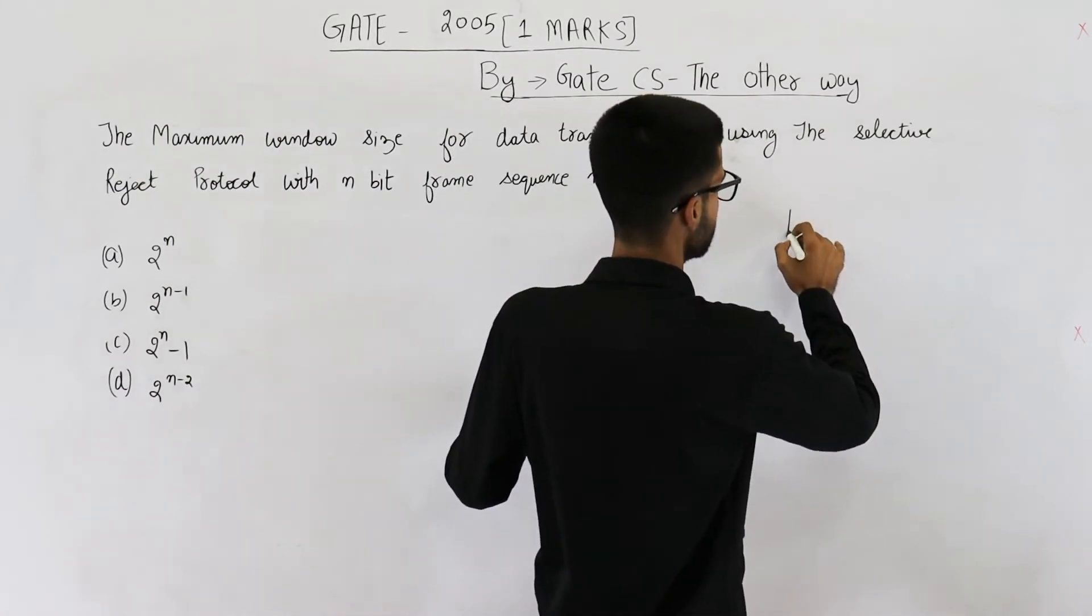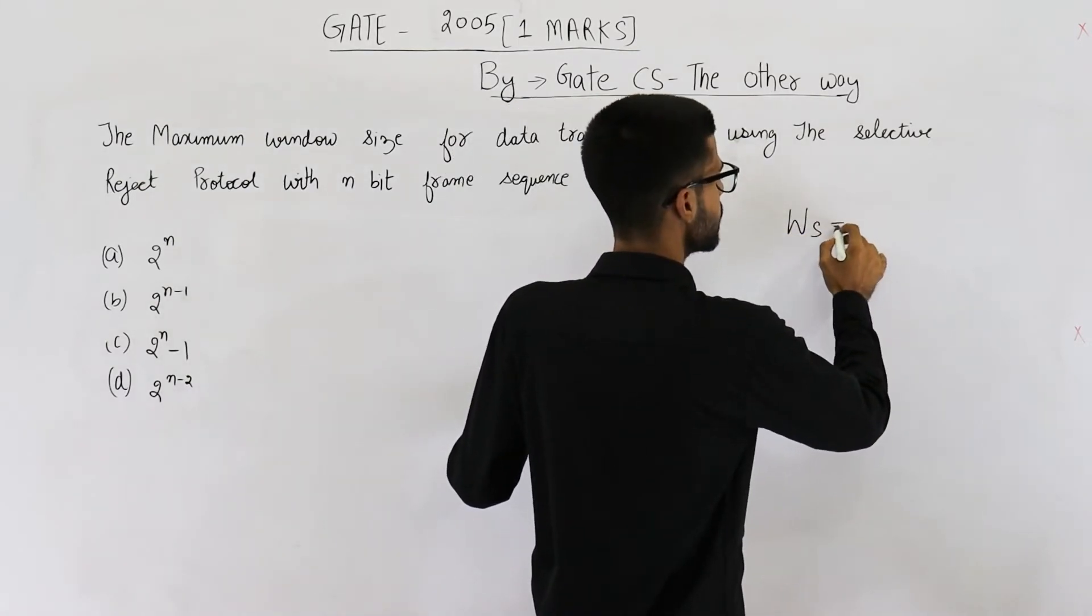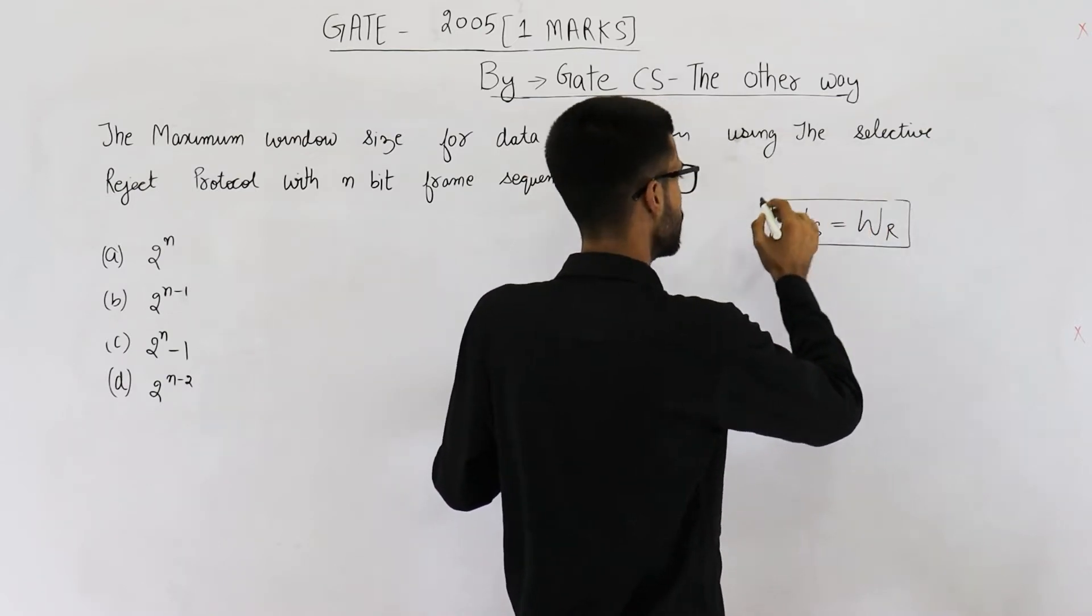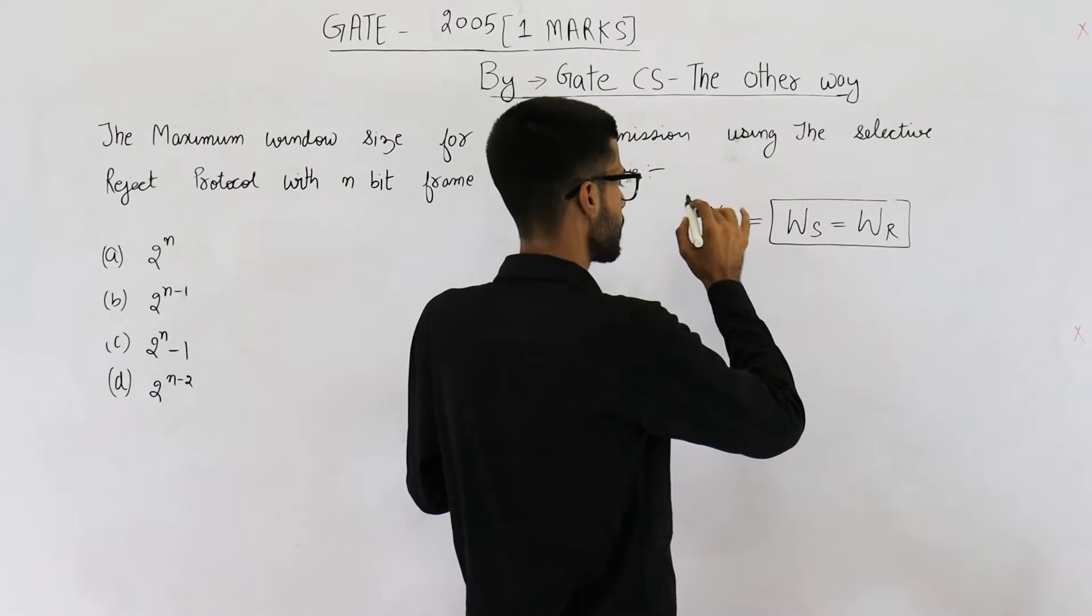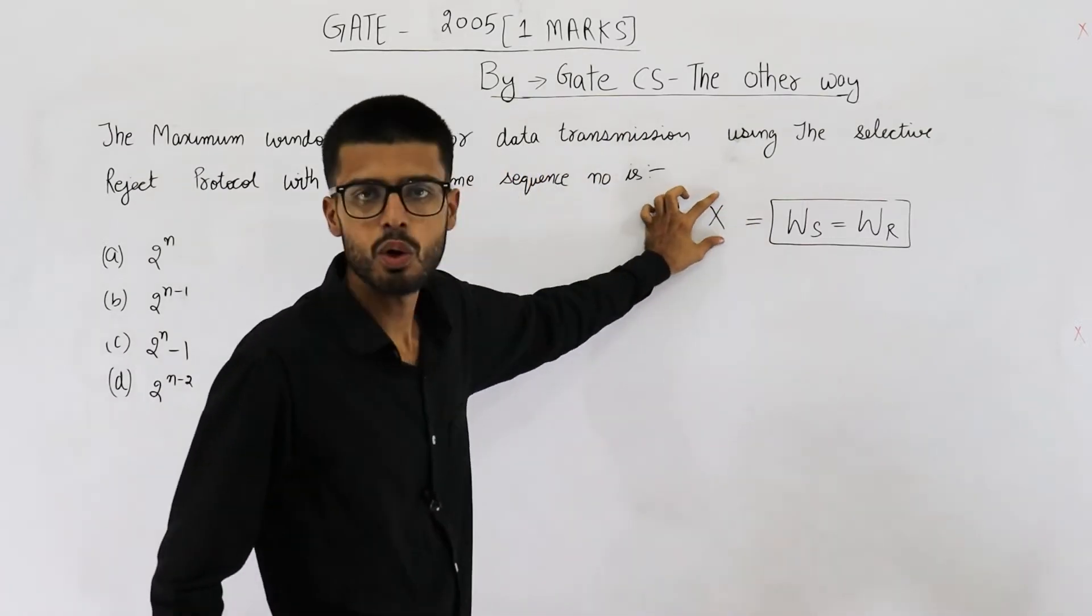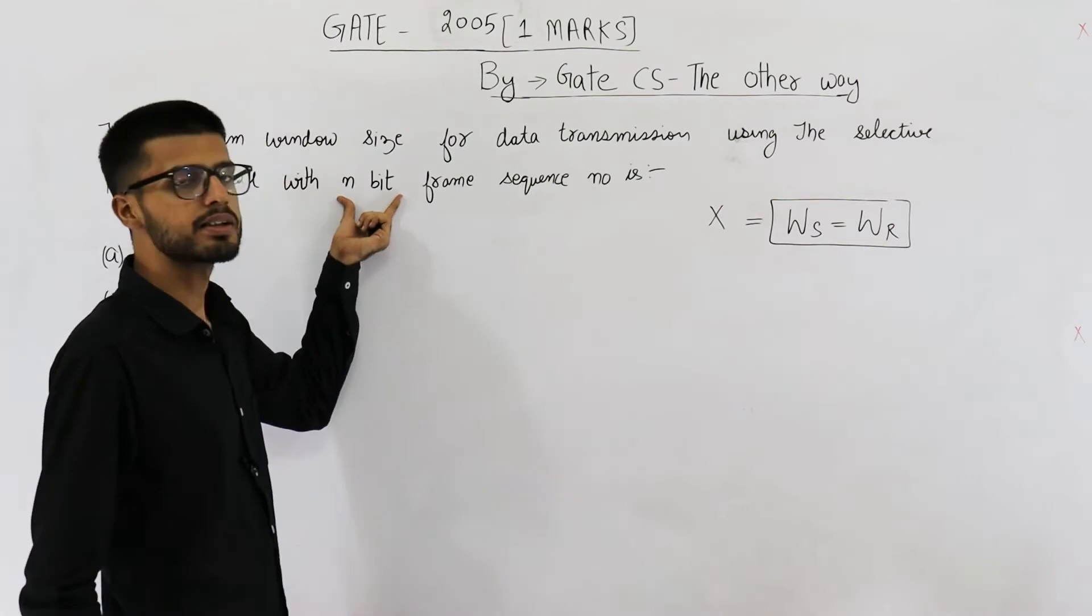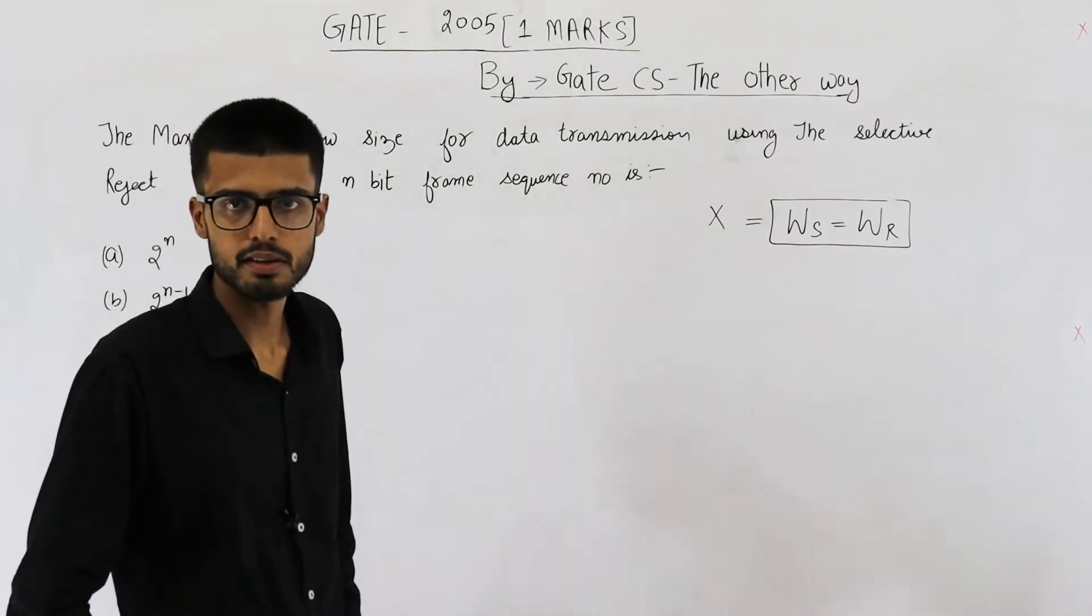So let me just write it: window size of sender is equal to window size of receiver because it is selective repeat. Suppose this value is X. We need to determine what is the maximum value that X can take if n bits are allowed in sequence number field.